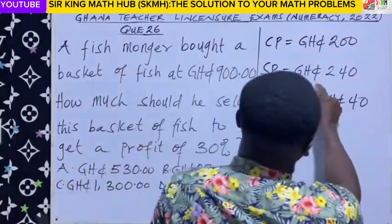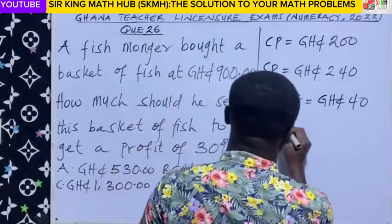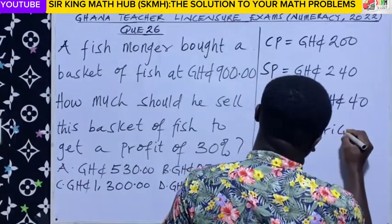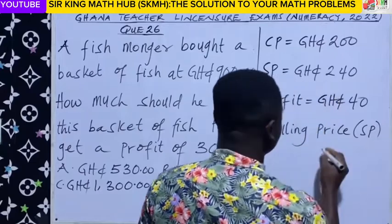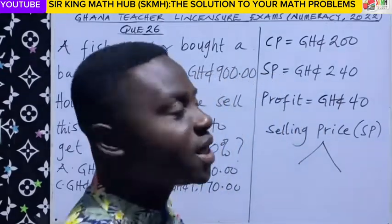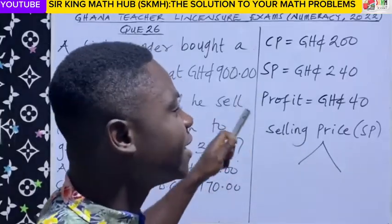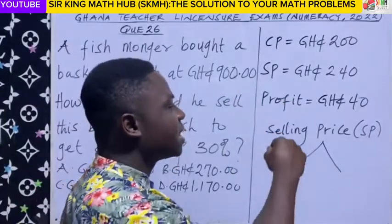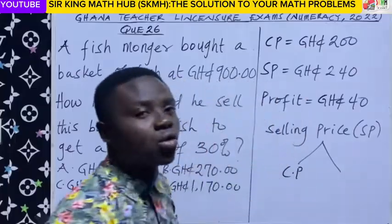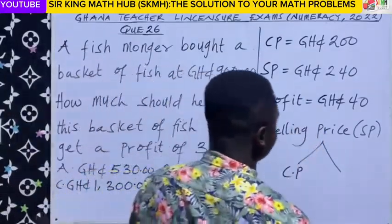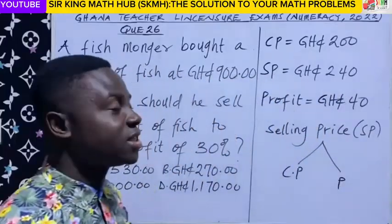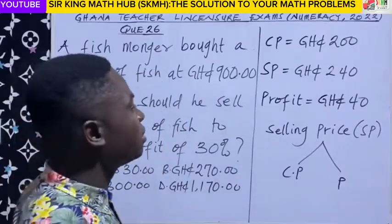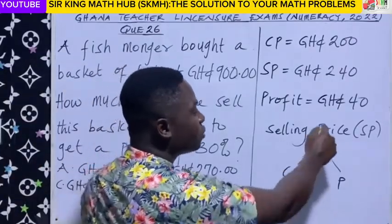Now let's focus on the selling price. When you take a closer look, you can see that the selling price has two components. The selling price includes the cost price and the profit. When you sum up the cost price and the profit, that should give you the selling price.